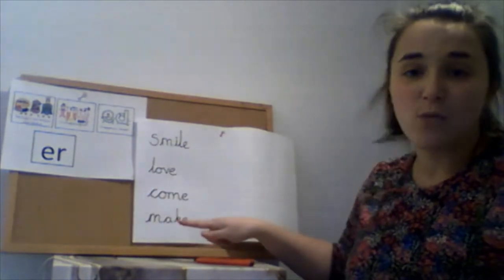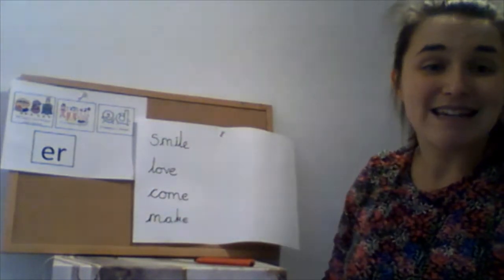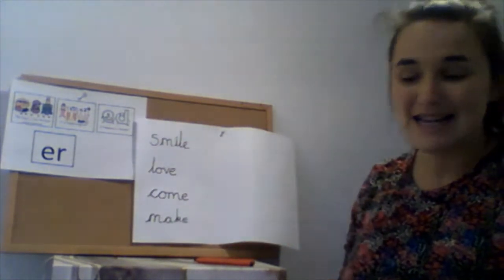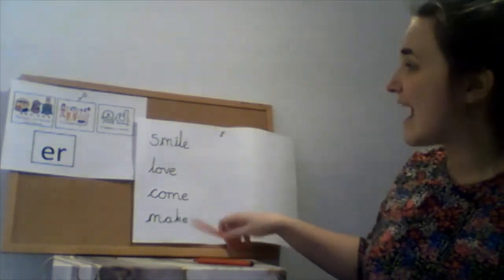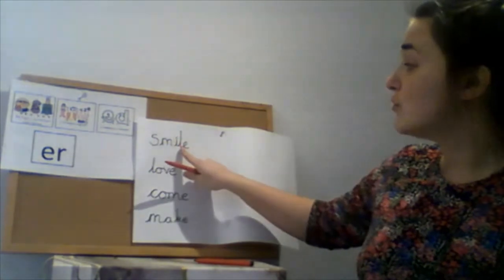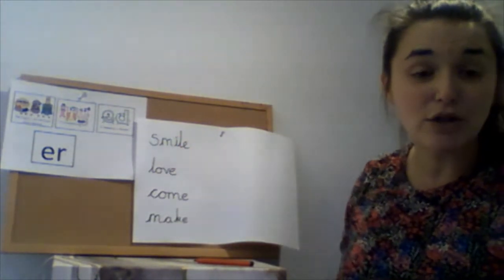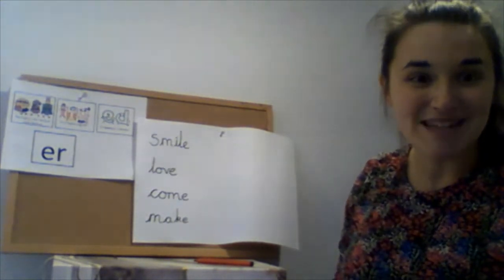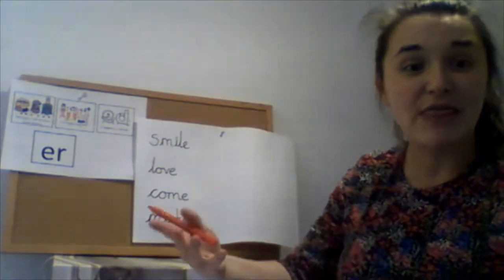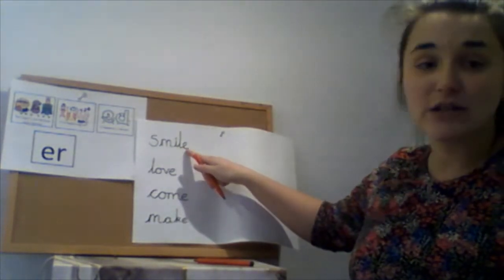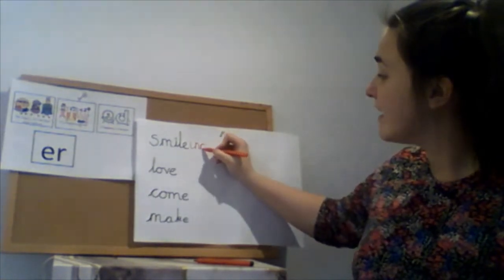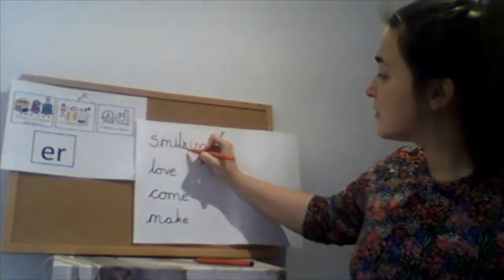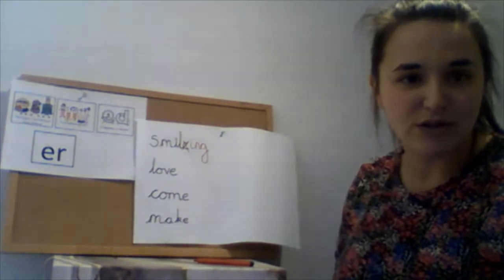Last week we looked at some words and these words all ended in an e, like in the word 'smile'. Now if I wanted to add the suffix -ing to the root part of the word 'smile', I had to do something first. Can you remember what I had to do? Yes, I had to drop the e and then add the suffix — I can't just add it straight away. I have to get rid of the e first, drop the e and then add the suffix.